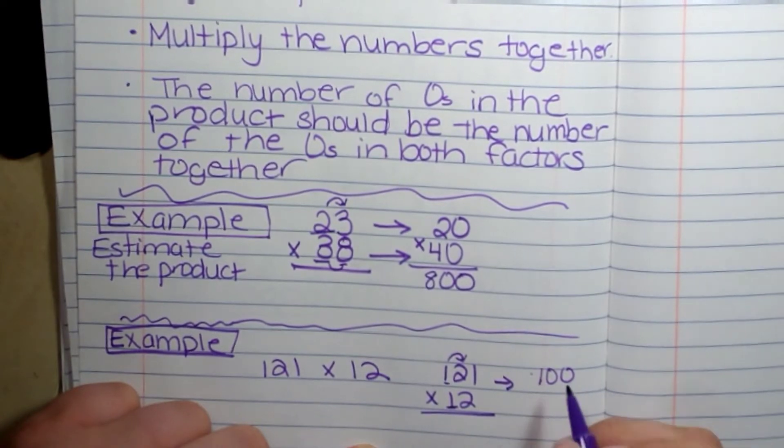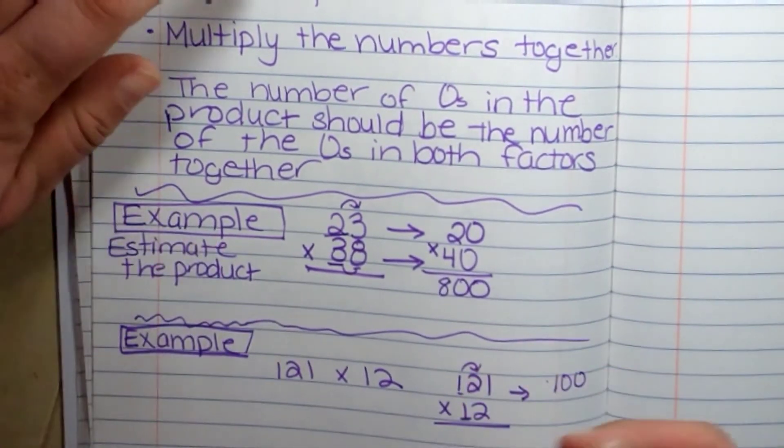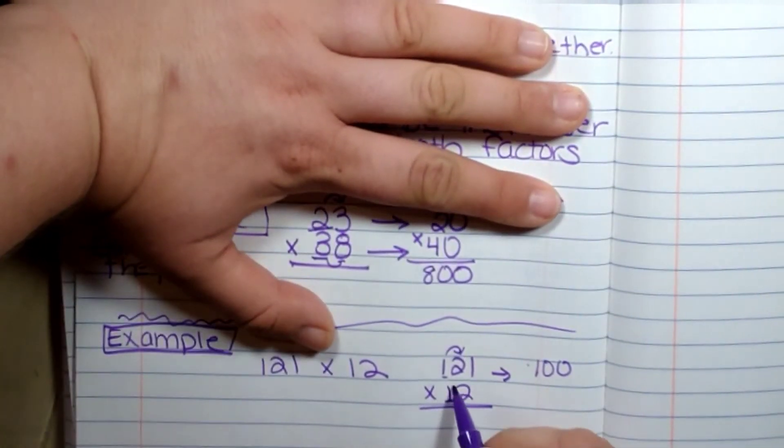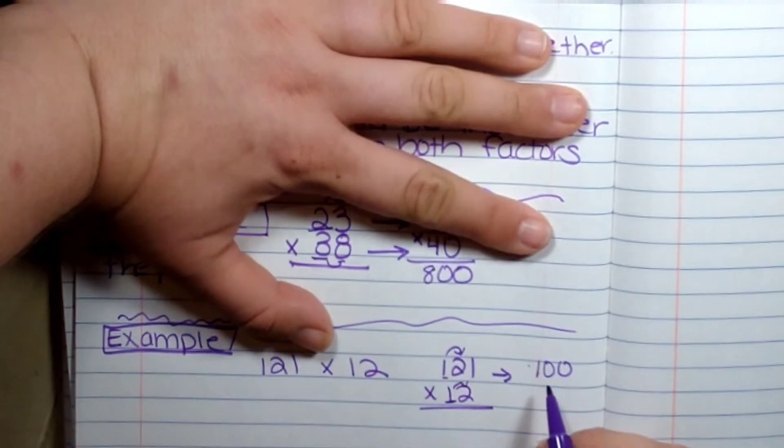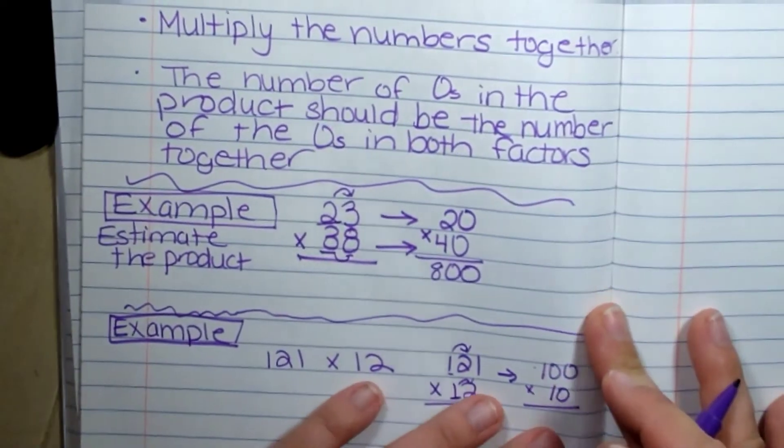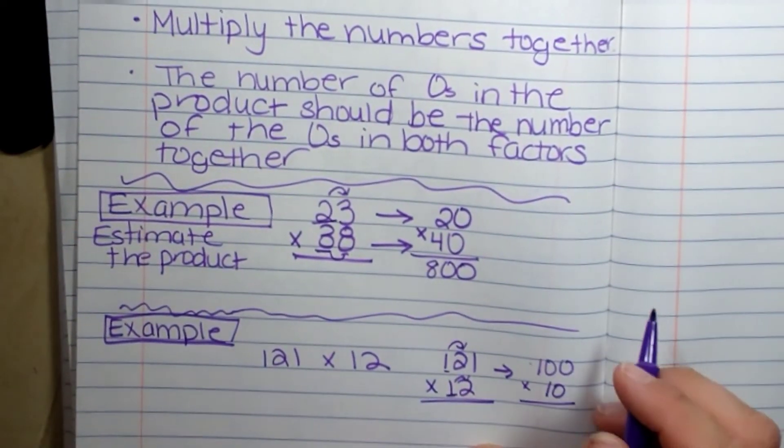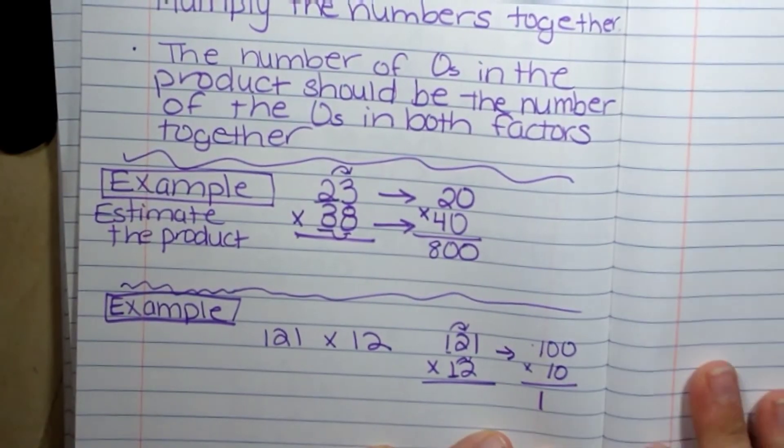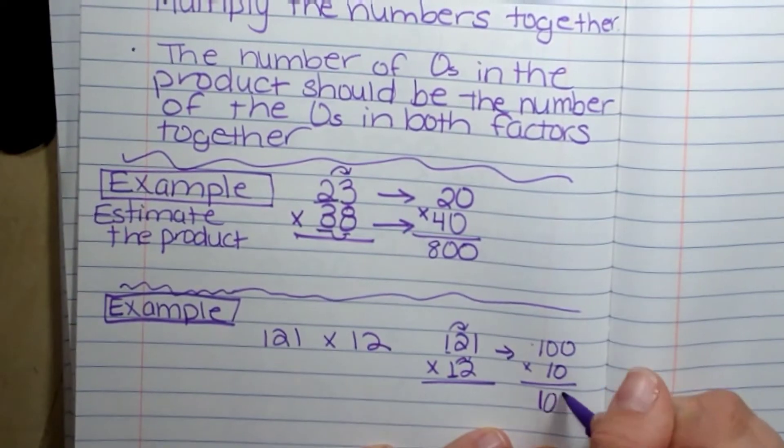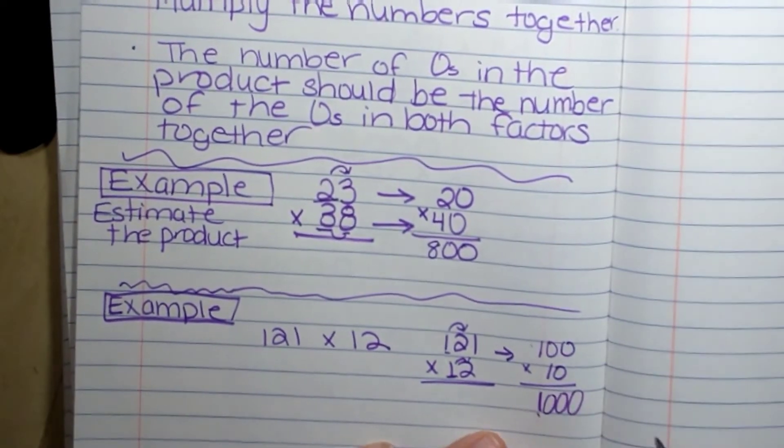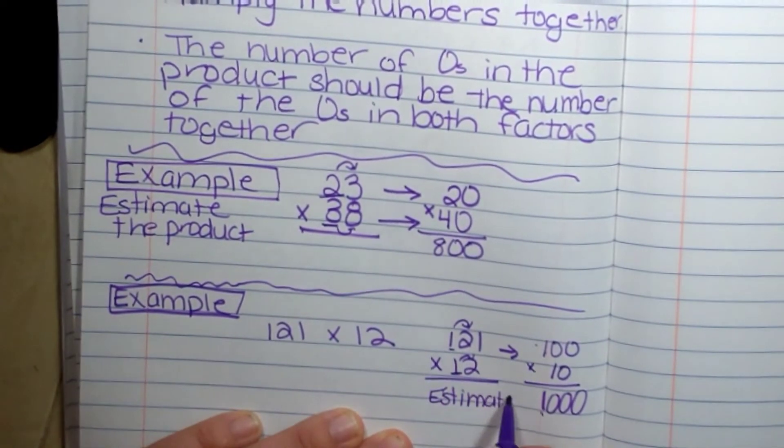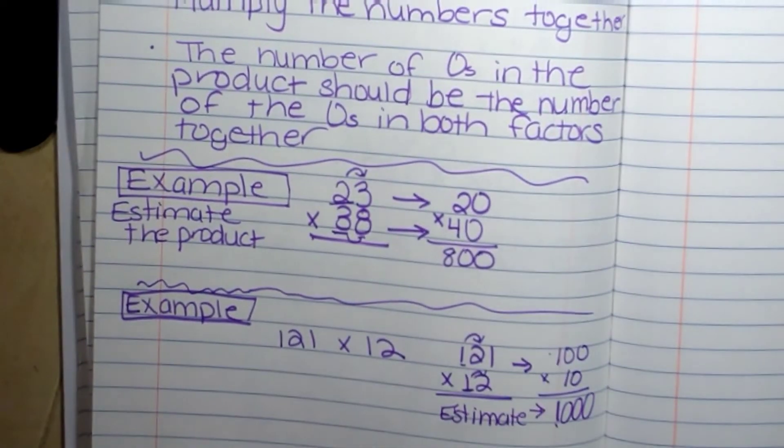I look next door, two is four or less, let it rest, so it is 10. I'm going to multiply all my numbers that are not zeros. So one times one is one. How many zeros do we have? One, two, three. One thousand is our estimate. 121 times 12 is about a thousand.